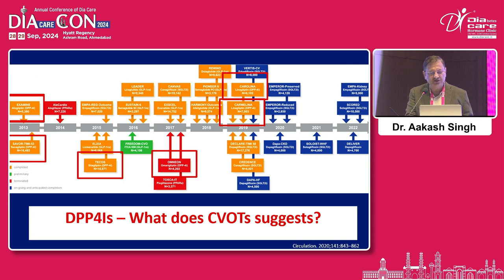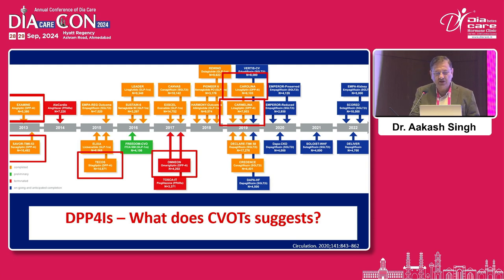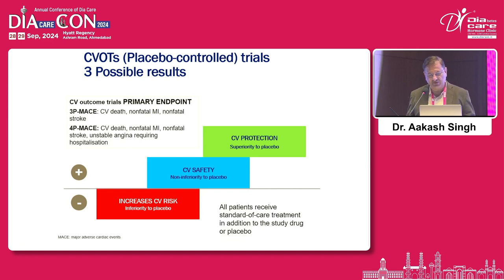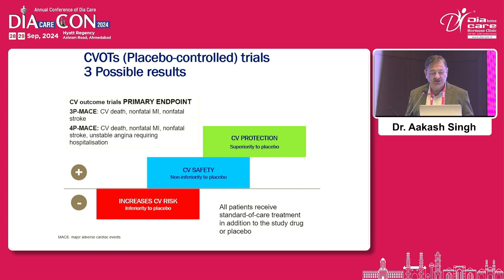These were the various studies done with DPP-4 inhibitors. The initial studies with alogliptin and saxagliptin were concerning because they showed increased incidence of hospitalization for heart failure. But the TECOS study with sitagliptin established that sitagliptin is cardio-safe. The Carolina and Carmelina studies, which were recently published, also showed that DPP-4 inhibitors are safe on the cardiovascular front. CV outcomes are evaluated by three-point MACE — CV death, non-fatal MI, non-fatal stroke — and four-point MACE, which additionally includes unstable angina requiring hospitalization. Drugs are classified as increasing CV risk (inferior to placebo), CV-safe (non-inferior), or cardioprotective (superior to placebo).